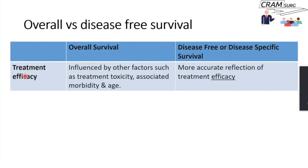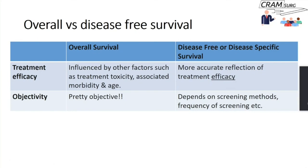Overall survival is influenced not just by the treatment of the cancer, but also by other factors such as chemotherapy toxicity and associated morbidity and age. Whereas disease-free or disease-specific survival gives a more accurate reflection of the efficacy of the treatment. In terms of objectivity, overall survival — death from any cause — is pretty objective: you can't argue about whether someone is dead or alive. However, disease-free or disease-specific survival is not very objective.